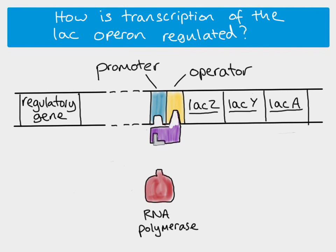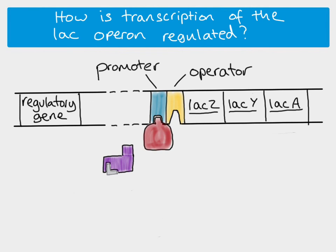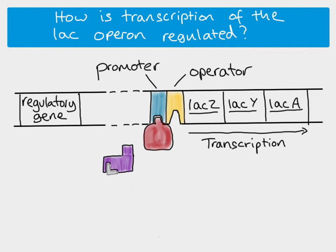Because lactose is present, it binds to the repressor protein, and the repressor protein is now unable to bind to the operator. This means RNA polymerase is able to bind to the promoter and transcription takes place. The presence of the substrate — lactose — has induced transcription. So the lac operon is an example of inducible enzymes: they are only produced when the gene is switched on, and that only happens when the substrate of the enzyme is present.